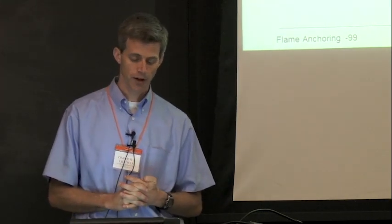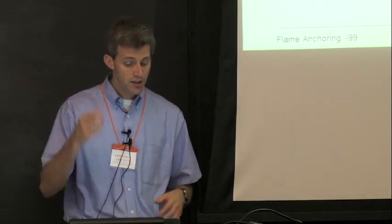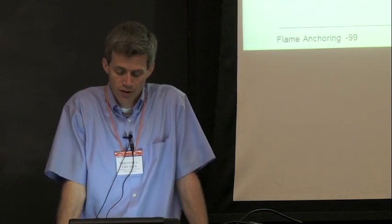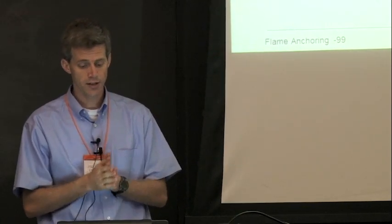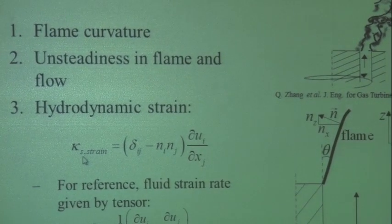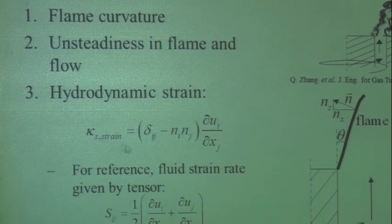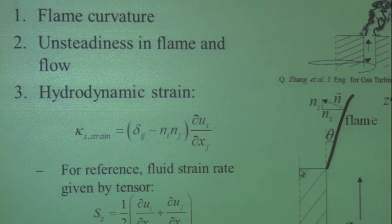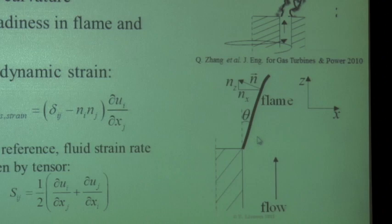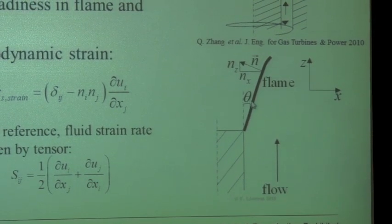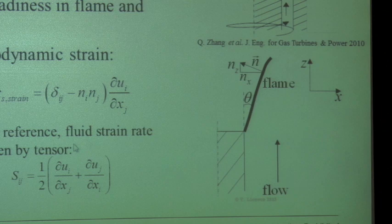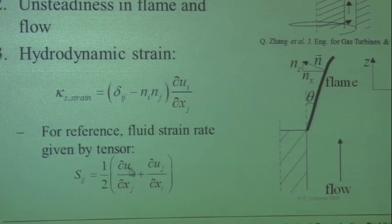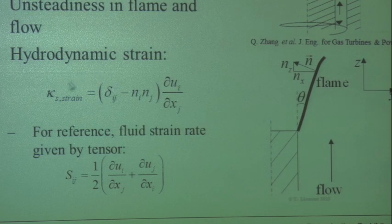There are a couple of different sources of flame stretch: flame curvature, unsteadiness, and hydrodynamic strain. What I'm really going to focus on is hydrodynamic strain — the strain induced by gradients in the flow velocity. Assuming a two-dimensional problem and incompressible flow upstream of the flame, I can write out this expression for flame stretch. There are two key contributions. You can have normal strain — if you take a fluid element in an incompressible flow, you can deform it; that's normal strain. The other way is shear strain.